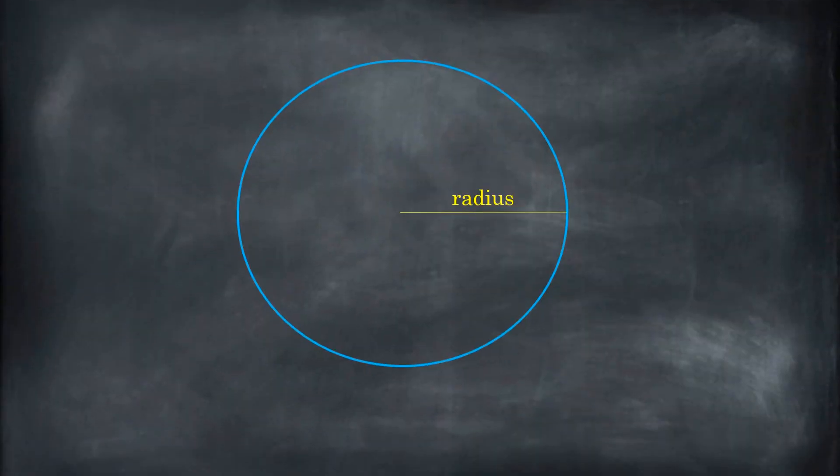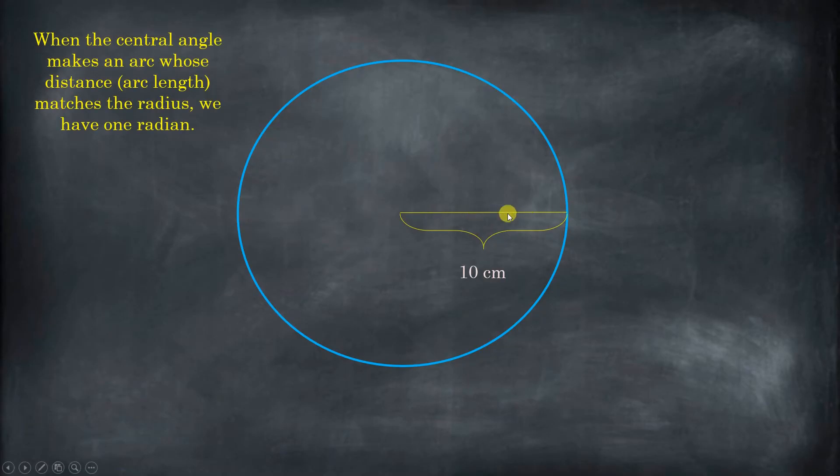So imagine you have a circle with a radius that is, say, 10 centimeters. What a radian is, is an angle that's created an arc length that is the same distance as the radius. So if I start here and I start rotating counterclockwise, when this arc length right here is the same distance as that radius, then I have one radian.